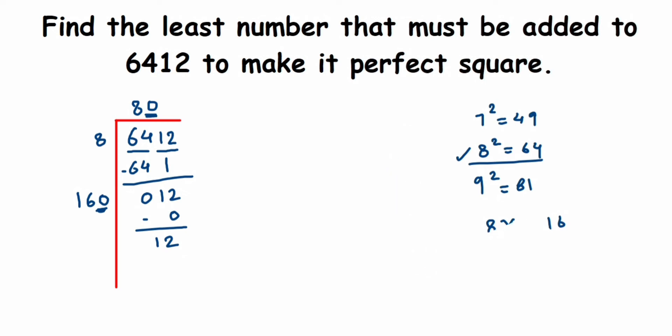Long division method is normally used to find the square root. We're not getting a square root because a remainder is left. We got 80 in the quotient, which means 80 square, which is 6400, is less than 6412. 6400 is a perfect square which is less than 6412.